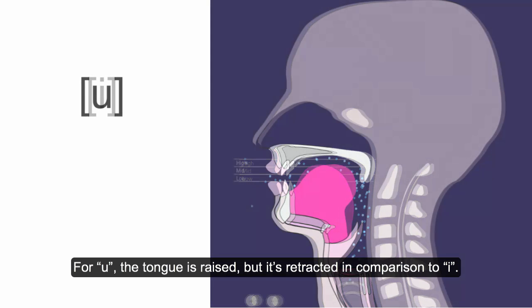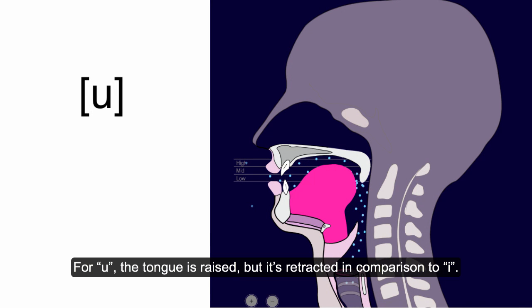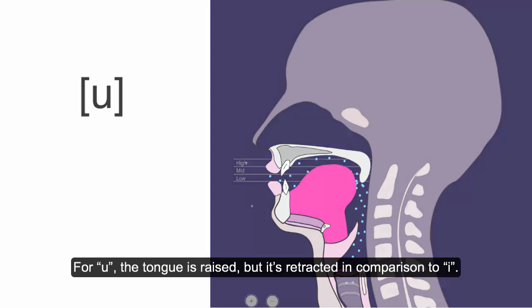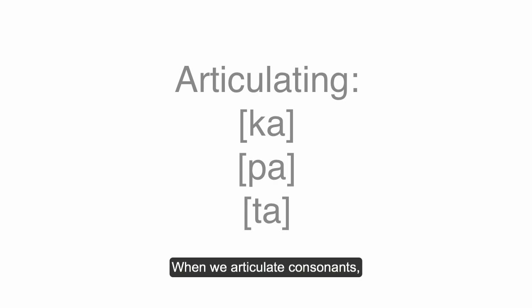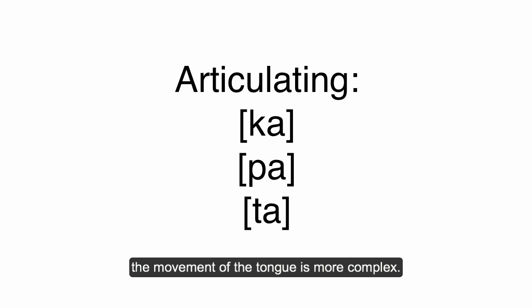For u, the tongue is raised but is retracted in comparison to i. When we articulate consonants, the movement of the tongue is more complex.